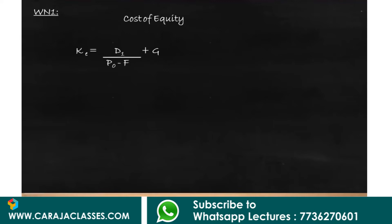If there is a flotation cost, it should be deducted from P0. We know D1 is equal to 15, P0 is 125 which is the market price with the issue, and the flotation cost is 5. We have D1, P0, and F, but we don't have g. G is the growth rate.